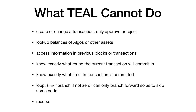Teal cannot know exactly when it is running, but it knows that the transaction is somewhere between first valid and last valid, so you know approximately when it is executing. Teal cannot know exactly what real-world time the transaction is happening, but with Algorand rounds taking approximately five seconds, you know approximately when in the future the transaction block will happen. Teal cannot loop — branch if not zero can only branch forward — so you could use this to detect that an argument is zero, skip a divide that would panic and fail the transaction, and then do other code. And Teal cannot recurse.